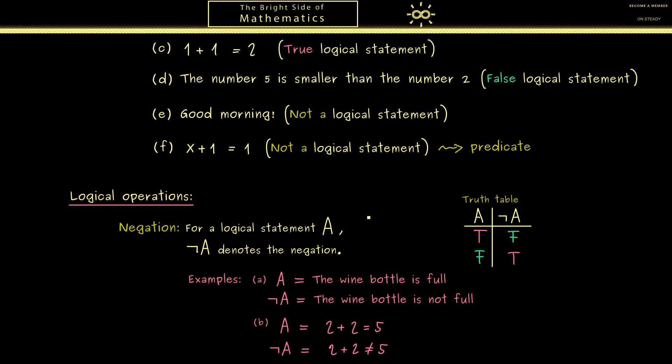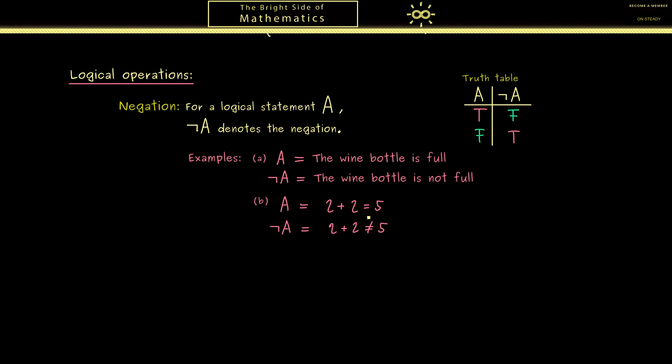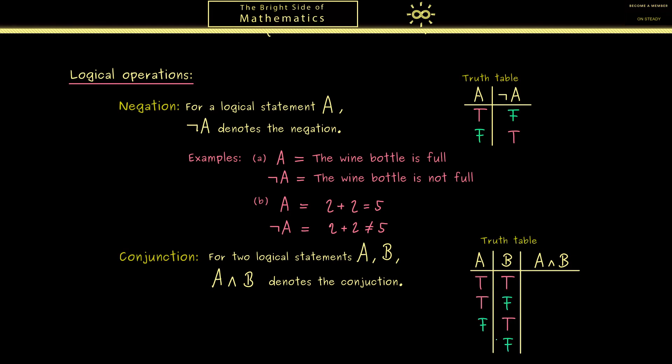Besides the negation we have another fundamental logical operation which is called the conjunction. It combines two logical statements let's call them A and B and then the conjunction is defined by this wedge symbol in between. You should read it as A and B because it's the and operation which means this one is only true if A and B are true simultaneously. With this information you are already able to write down the whole truth table which we would see as the correct definition. Now instead of two rows we have four rows because we have four possible combinations of the truth values of A and B. Now from bottom to top you know this one is false because we have at least one false here. The same here and the same here. Everything is false except the first row. This one is true because both are true.